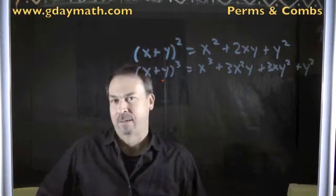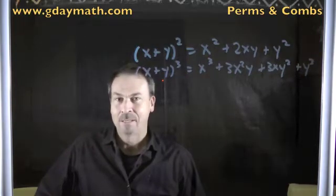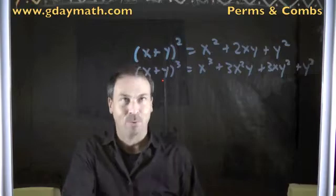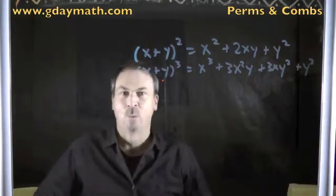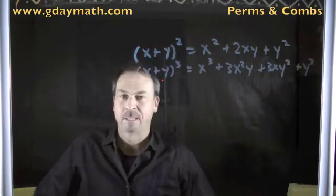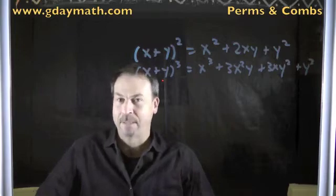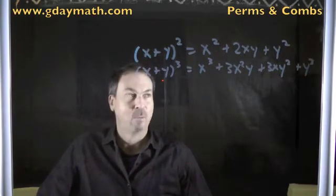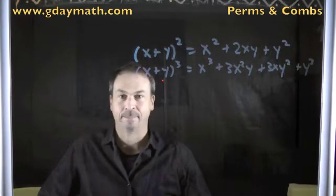When I was in my 10th grade math class, many decades ago back in Australia, our teacher wrote on the back of the classroom board the following two equations: x plus y squared equals x squared plus 2xy plus y squared, and x plus y cubed equals x cubed plus 3x squared y plus 3xy squared plus y cubed. And we were expected to memorize those two formulas — just there for us to memorize for the first few weeks, and then they were meant to be in our heads.